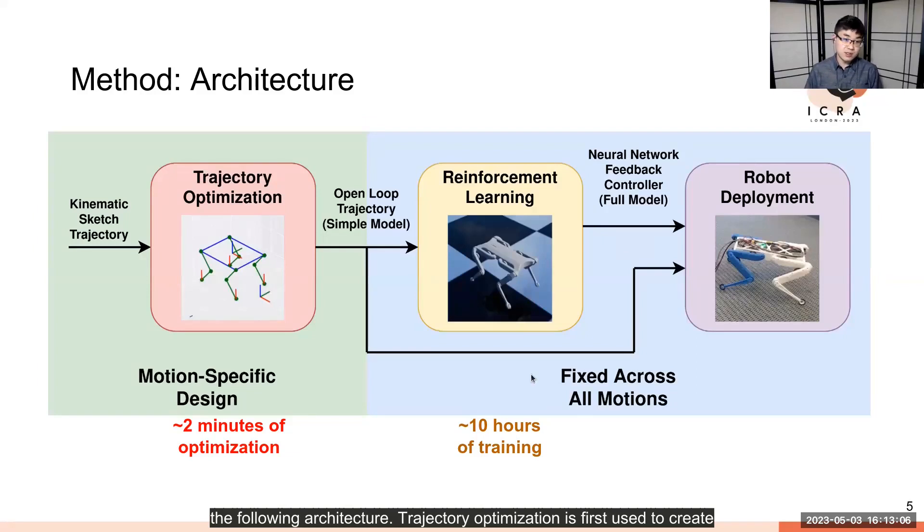Trajectory optimization is first used to create an open-loop trajectory that is valid for a simplified model of the physics. Then, reinforcement learning is used to create a neural network feedback controller, which can be deployed on a physical robot without any online model adaptations or learning.